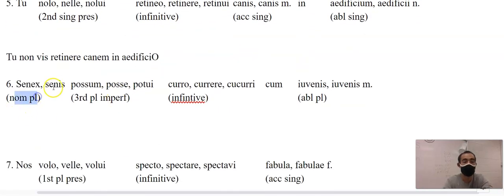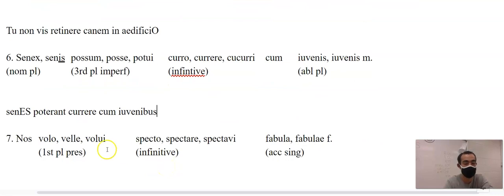So senex is going to be nominative plural. You take the I-S that tells us it's third declension, take it off, add E-S, senes. Poterunt, this takes imperfect forms of sum, erunt, and that takes a T, poterunt. Currere cum iuvenibus. Third declension is ebus in the plural with that, with it.